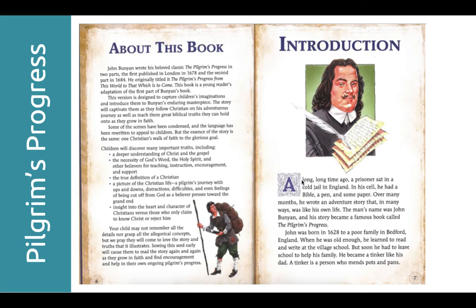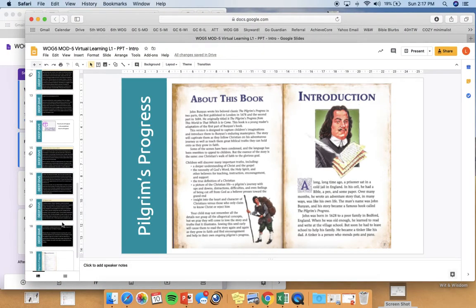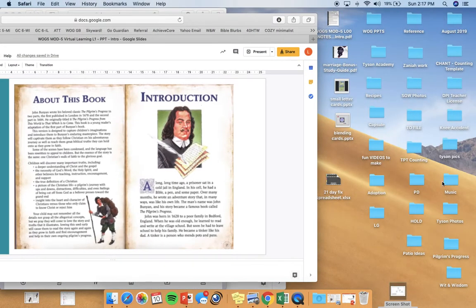Here's the introduction using John Bunyan. A long, long time ago, a prisoner sat in a cold jail in England — that's John Bunyan. In his cell he had a Bible, a pen, and some paper. Over many months, he wrote an adventure story that in many ways was like his own life. The man's name was John Bunyan, and his story became a famous book called The Pilgrim's Progress. John was born in 1628 to a poor family in Bedford, England. When he was old enough, he learned to read and write in a village school, but soon had to leave school to help his family. He became a tinker like his dad — a tinker is a person who mends pots and pans.